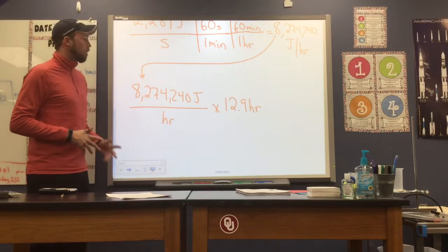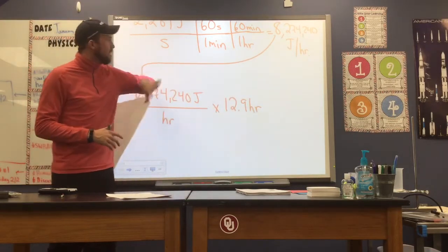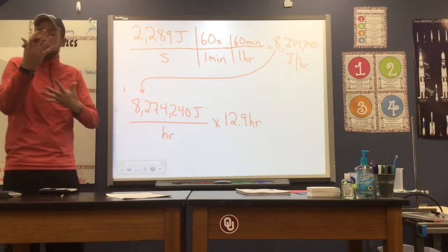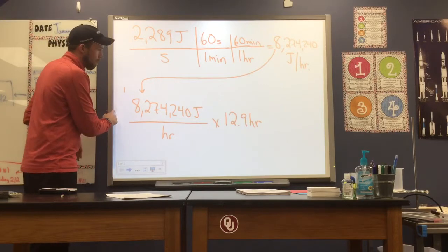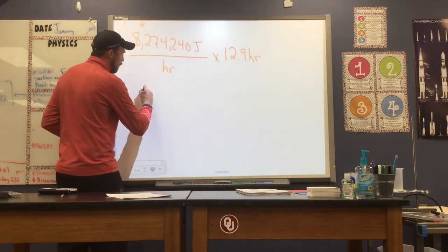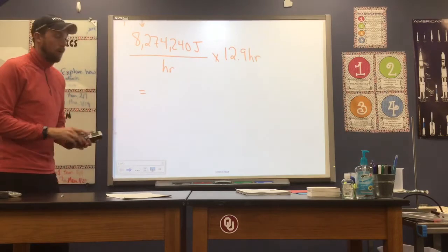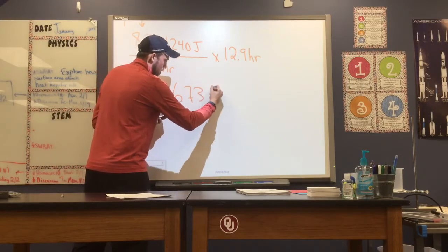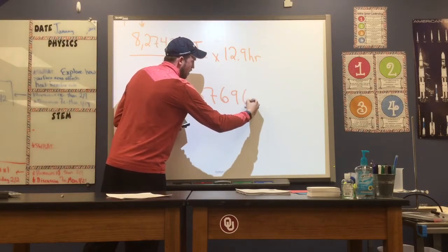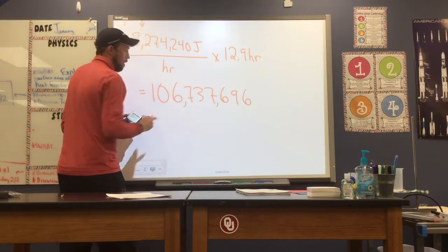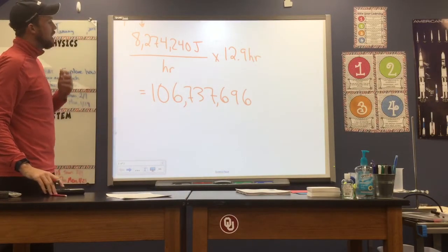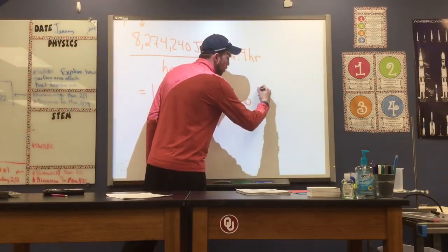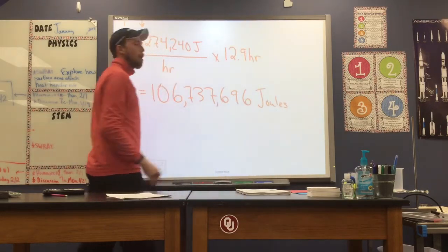Now, you can also go through this problem, you can convert the 12.9 hours to seconds, and multiply that by our rate in joules per second. That's fine, I just chose to do the problem this way. But you can solve it that way if that's more comfortable for you. So when I multiply these values together, I'm going to get something pretty large. I'm just going to go ahead and write all the way out. It's like 106,737,696. So that would be 106,737,696 joules in this time interval.